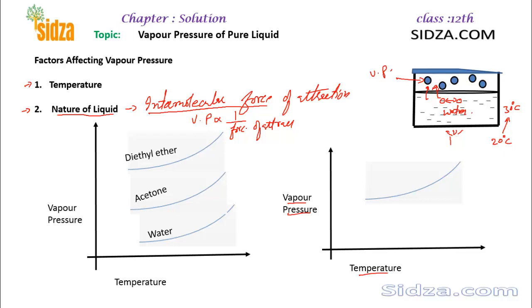That is why different substances show different graphs. For example, at any particular temperature you can compare: diethyl ether has a very high vapor pressure, acetone is much higher than water, and water has lower vapor pressure. This means the intermolecular forces in water are stronger than in acetone and diethyl ether, where the forces of attraction are very weak. Hope you got the concept — thanks for watching, bye for now.